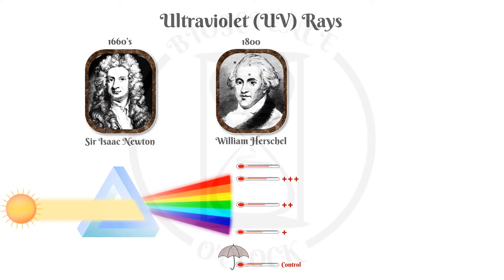However, he noticed that the thermometer located beyond the red light registered the highest temperature of all. With this experiment, Herschel found not only that the heating power of visible light is not equally distributed among the different colors, but he had also discovered infrared rays — invisible light with greater heating power than the red rays, which were referred to as heat rays in the 19th century.